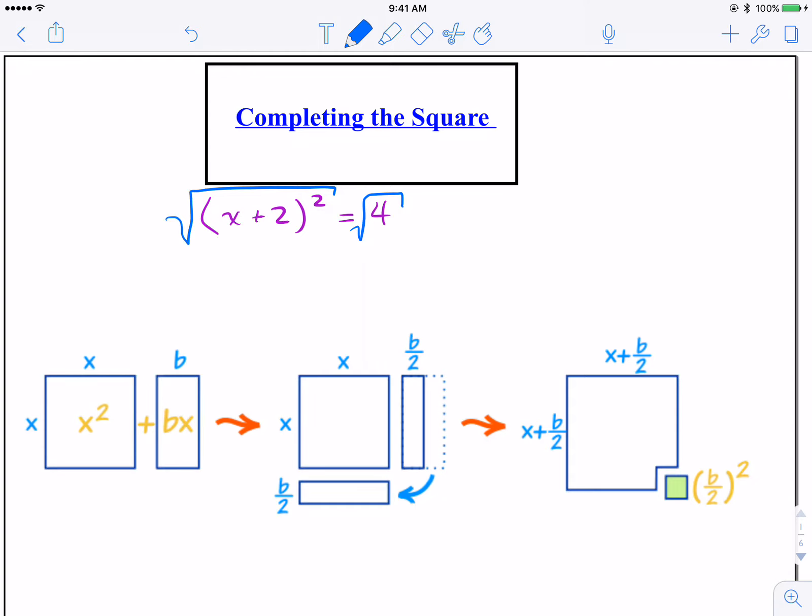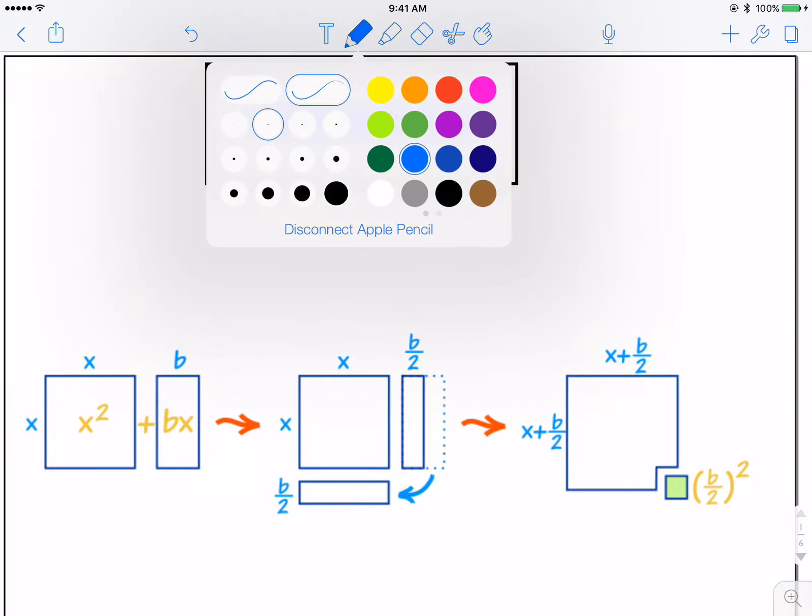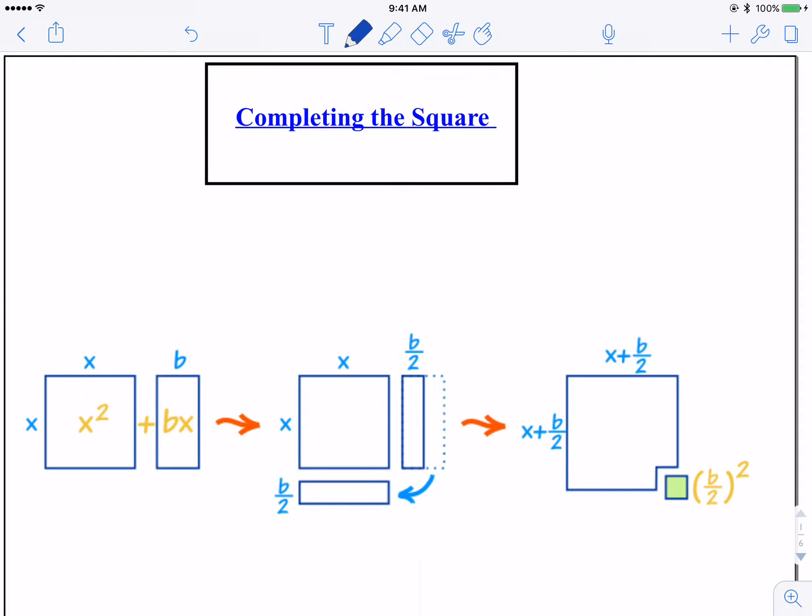You have your plus minus, simplifying radicals, all that fun stuff. So that's going to be our end goal, but before we get to the steps, how completing the square works, it all relates back to perfect trinomials.